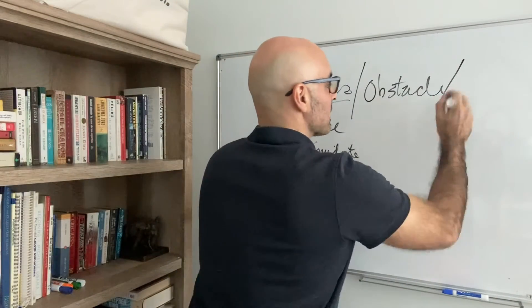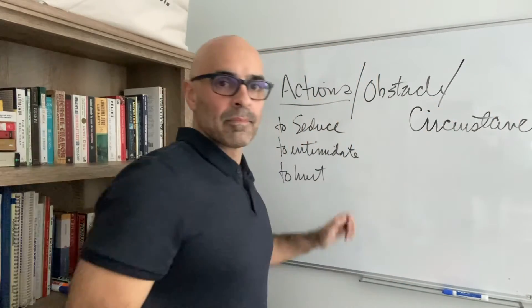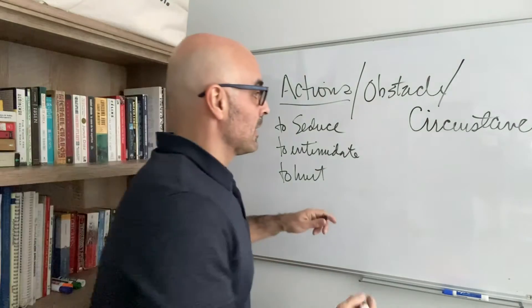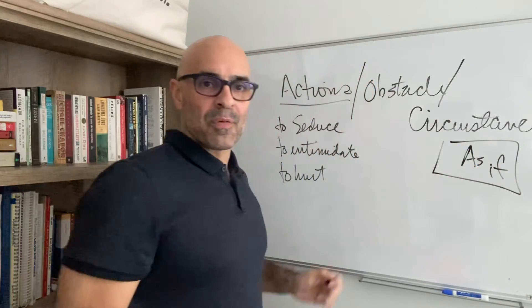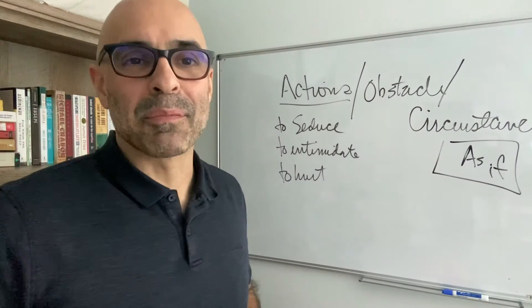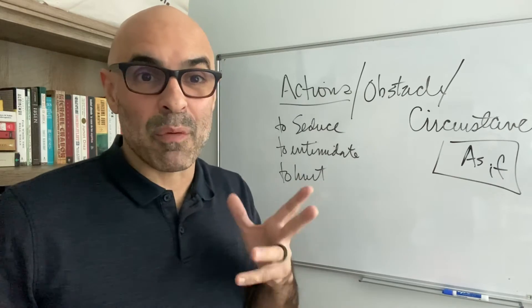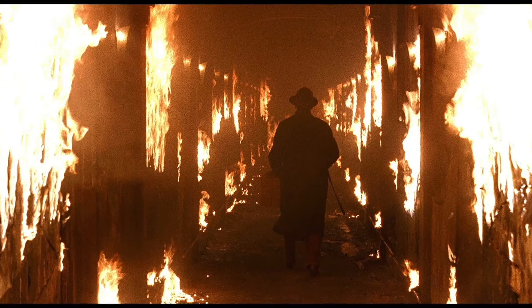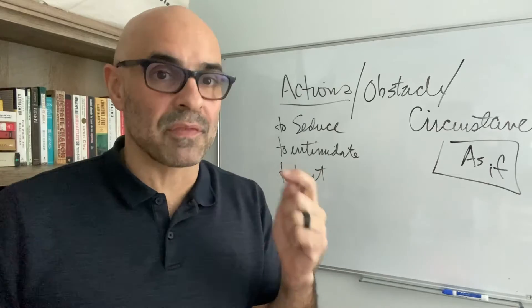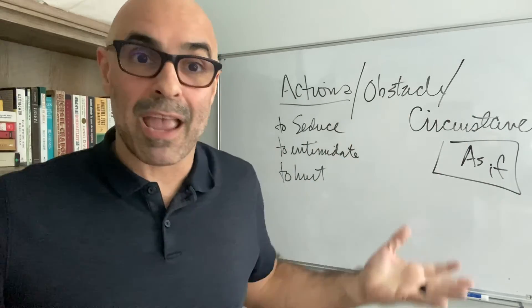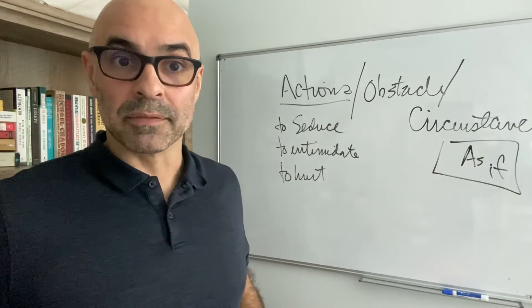And then the last piece of it is circumstance — or in some acting techniques, they call it the magic as if. This is something that a lot of times you'll see in an audition, where you will say to an actor: okay, I want you to do this scene, but I want you to do it as if this house was on fire. Go. I'm giving the person an imaginary moment, an imaginary piece of information to create behavior. I don't know what that behavior is going to be. So I give it to the actor and I rehearse it. I play it and I see if it works.